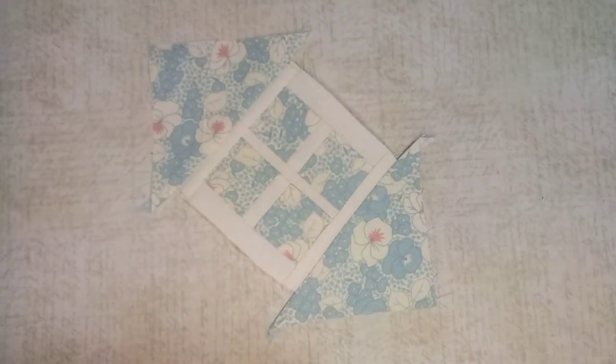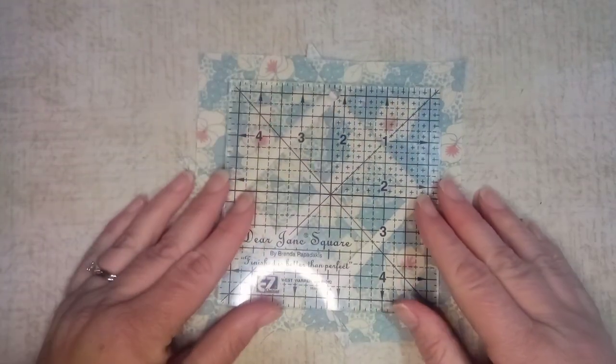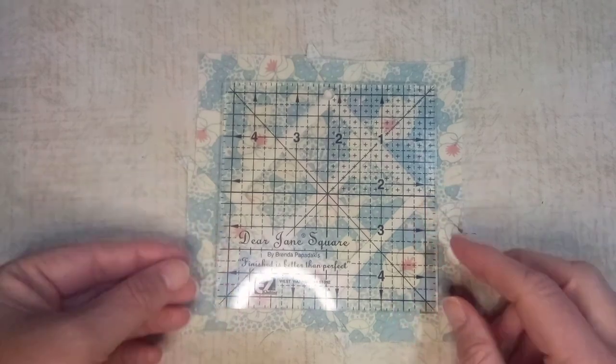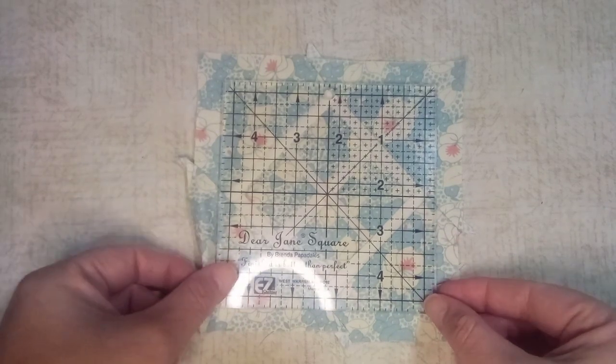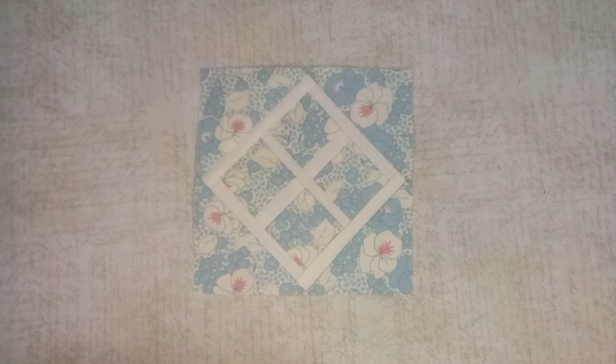The block is now sewn. When I put my ruler over, you can see I've got plenty of room for trimming, so I'm going to take this to my trimming mat and trim this block to size. There is the finished block, J2, also called Picture Perfect.